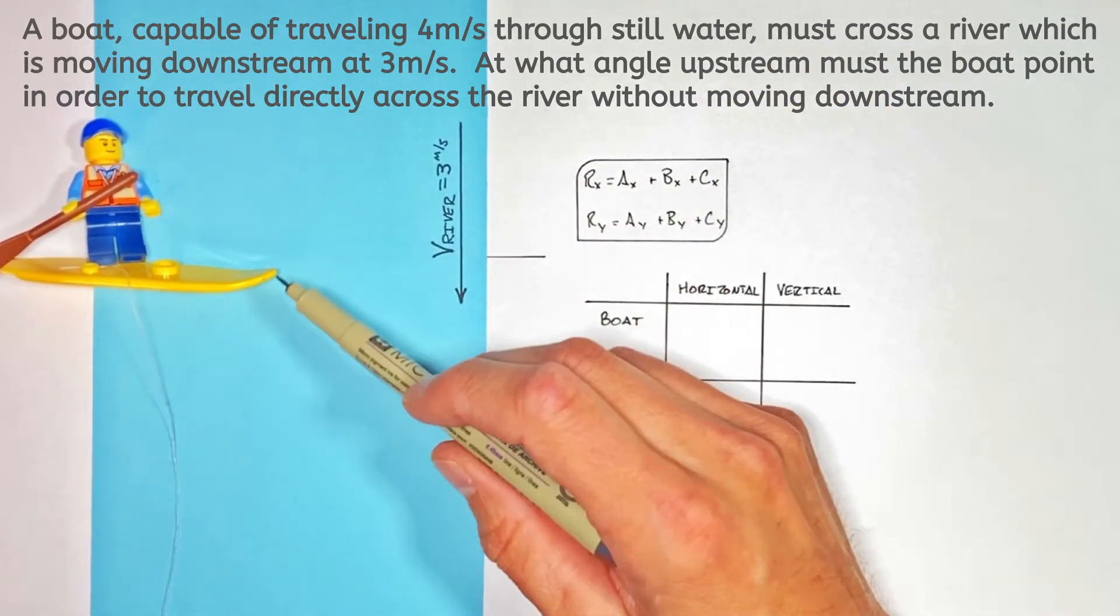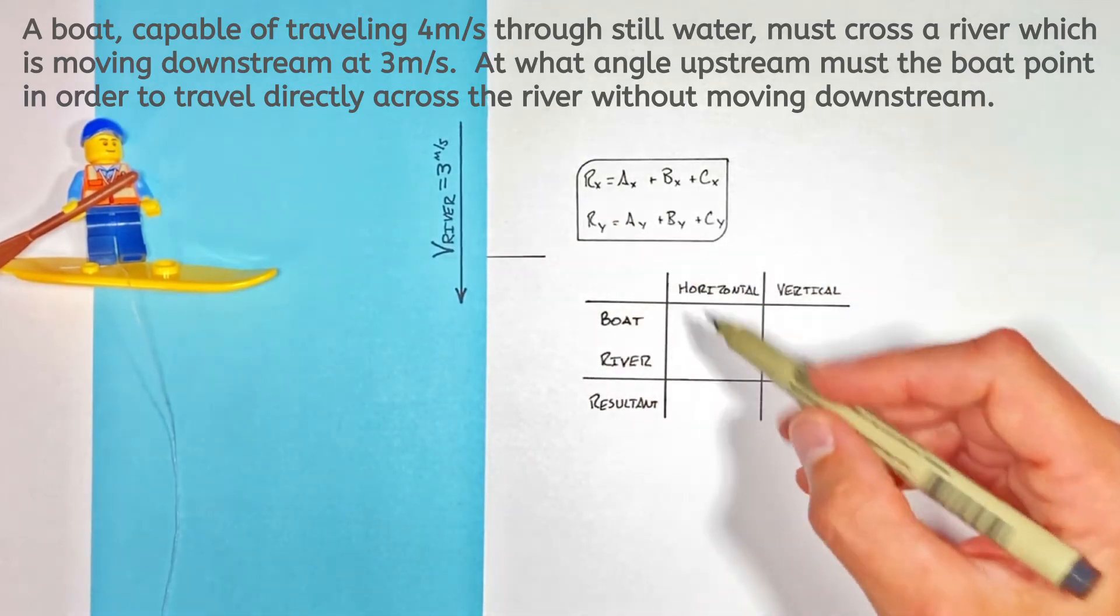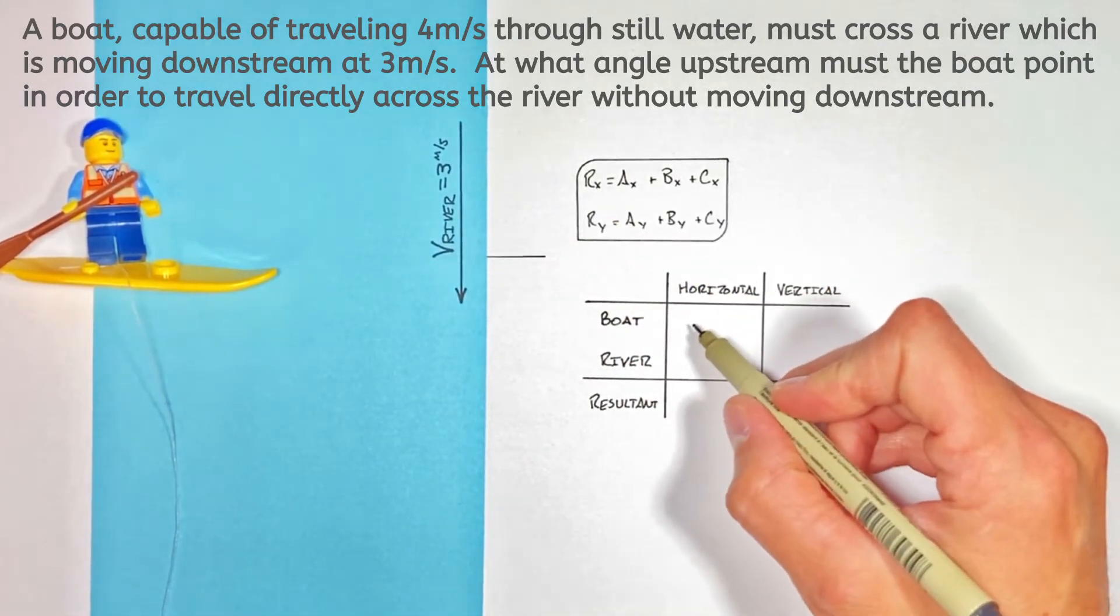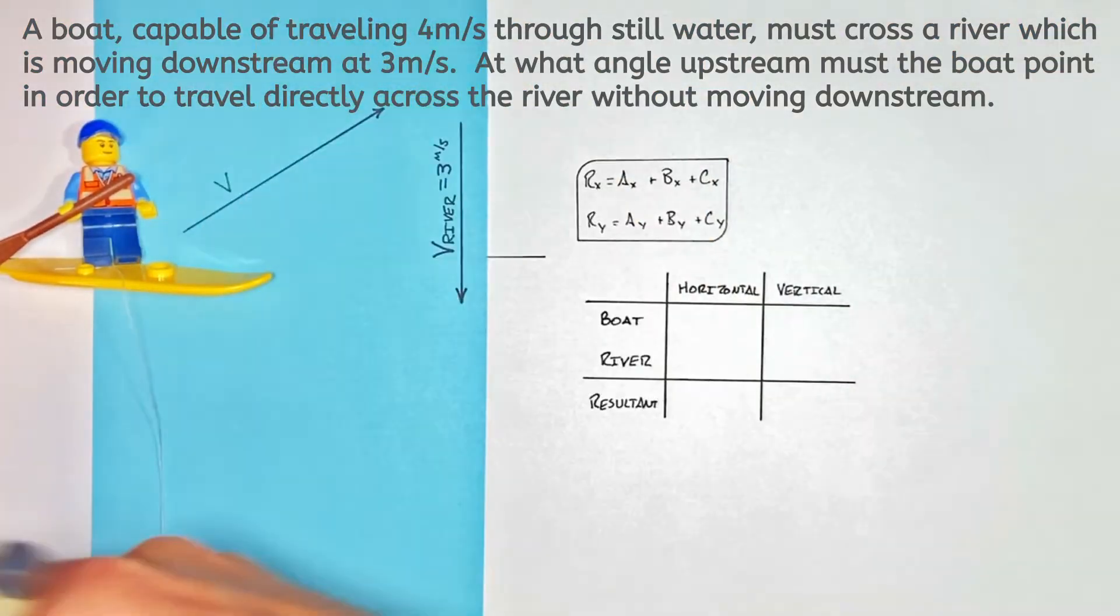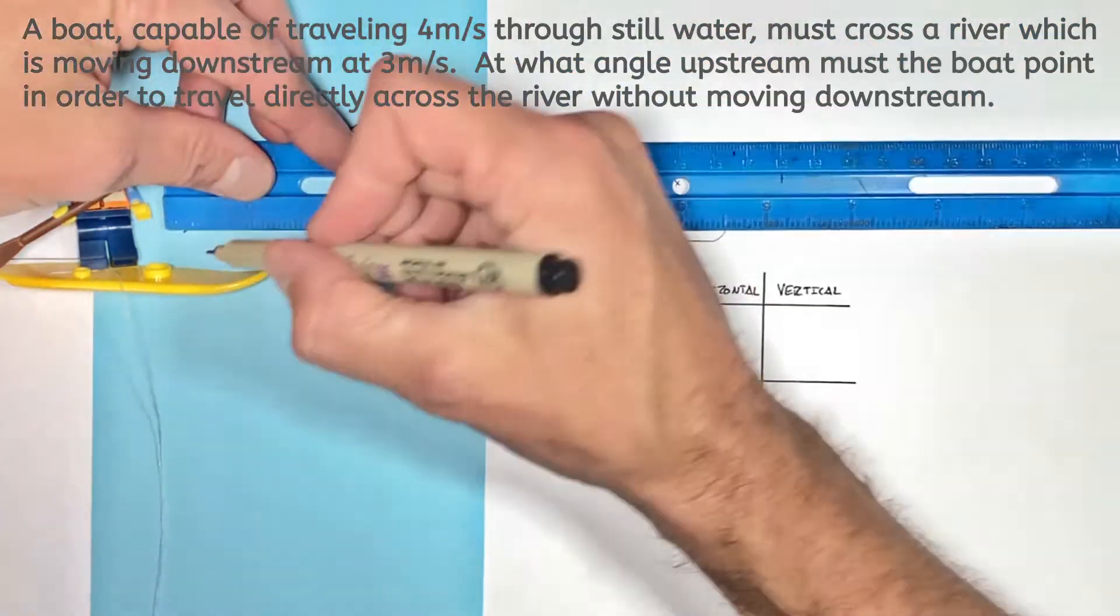Now, the problem says the boat can travel at 4 m/s through the water, but that 4 m/s isn't horizontal or vertical. That 4 m/s is at an angle, and it's that angle we're trying to solve for.